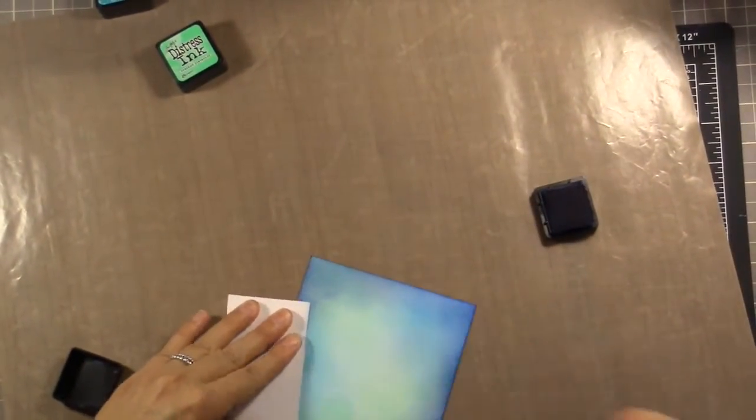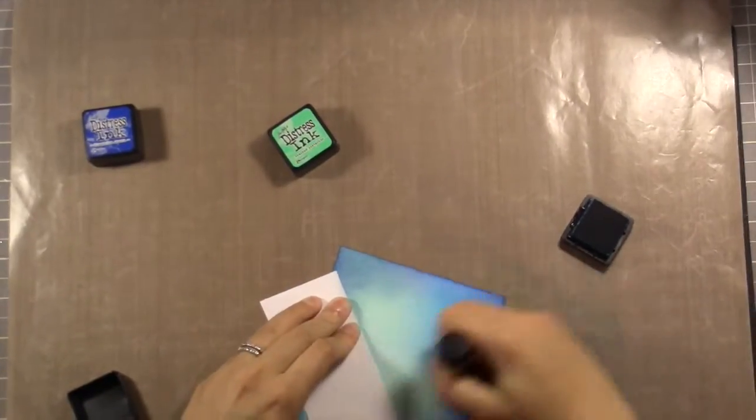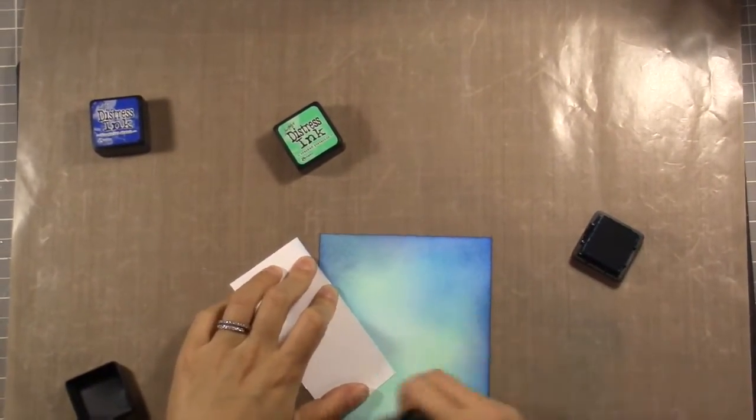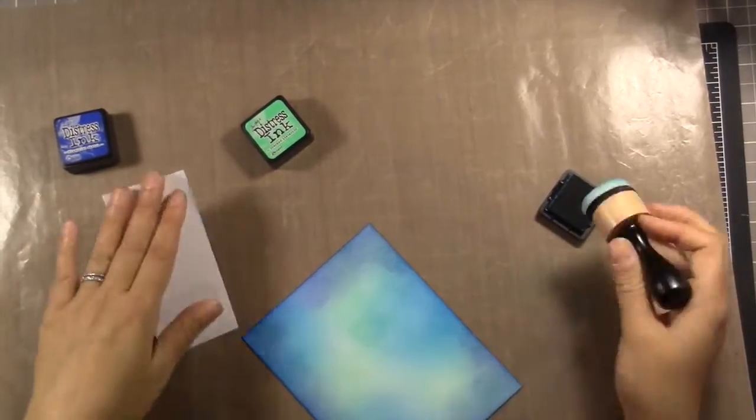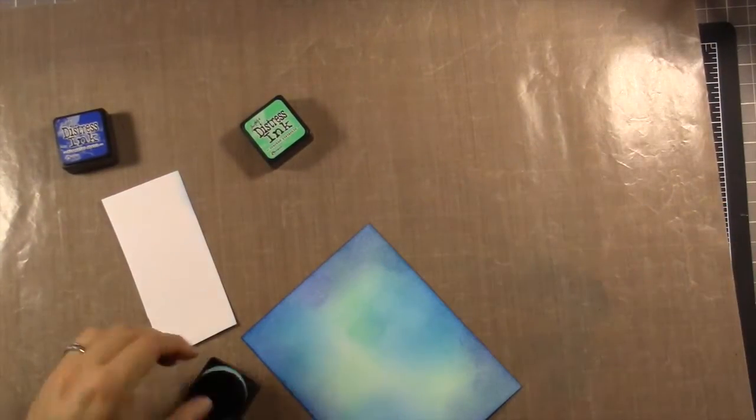I took Crack Pistachio and Mermaid Lagoon and kind of blended them on the background of the card. And then I went and took the Blueprint Sketch and just kind of darkened the edges up a bit. And I went back and forth between the Crack Pistachio and the Mermaid Lagoon to kind of get a blended and seamless look.